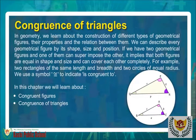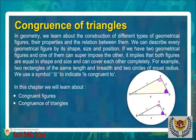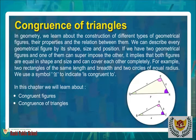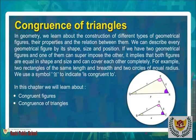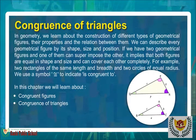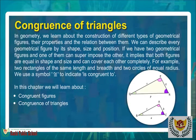In geometry, we learn about the construction of different types of geometrical figures, their properties, and the relation between them. We can describe every geometrical figure by its shape, size, and position. If two geometrical figures can superimpose each other, it implies both figures are equal in shape and size and can cover each other completely. For example, two rectangles of the same length and breadth, and two circles of equal radius. We use a symbol to indicate 'is congruent to.'